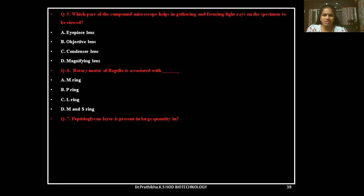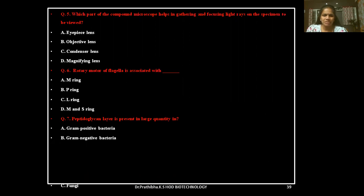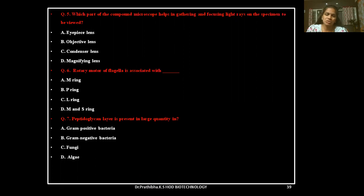Question 7: Peptidoglycan layer is present in large quantity in — gram-positive bacteria, gram-negative bacteria, fungi, or algae? If I'm going too fast, you can take a screenshot or pause the video and write your answer.